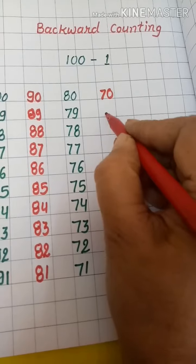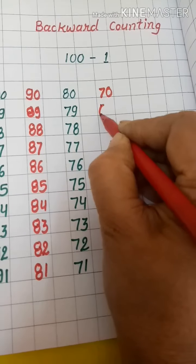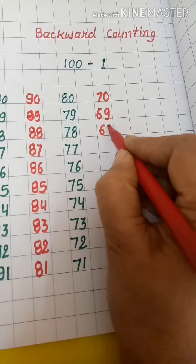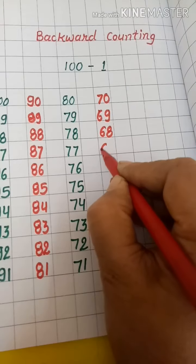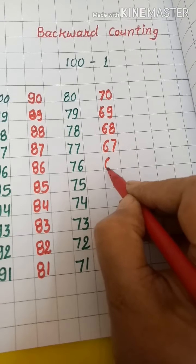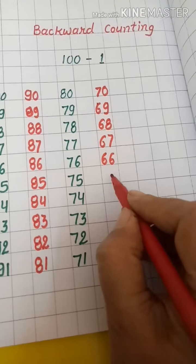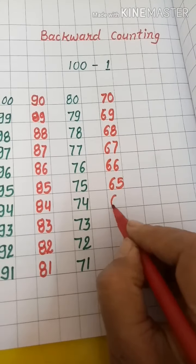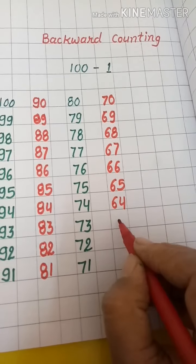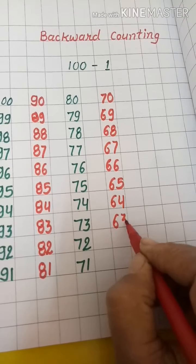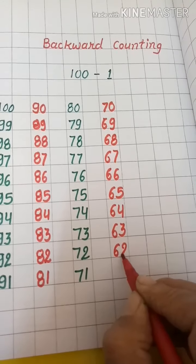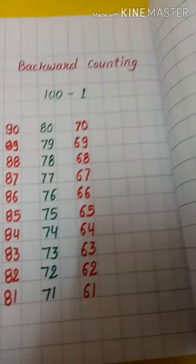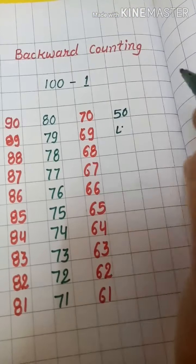Sixty-nine, sixty-eight, sixty-seven, sixty-six, sixty-five, sixty-four, sixty-three, sixty-two, sixty-one, sixty.